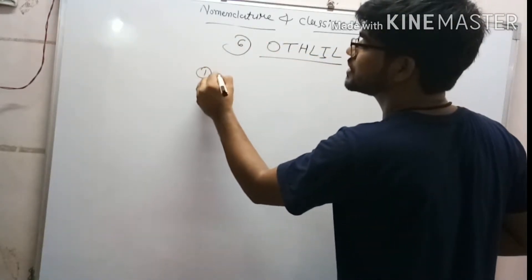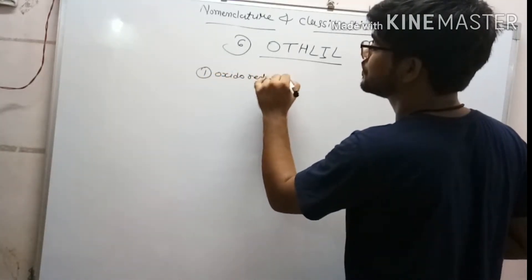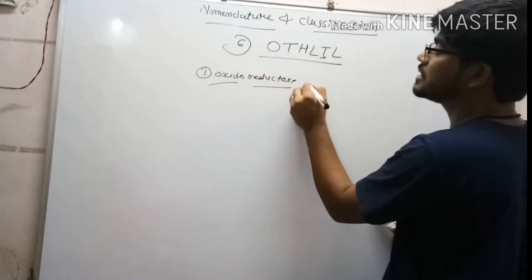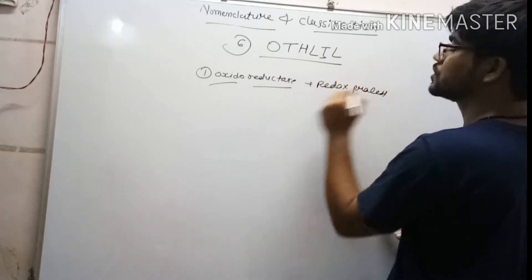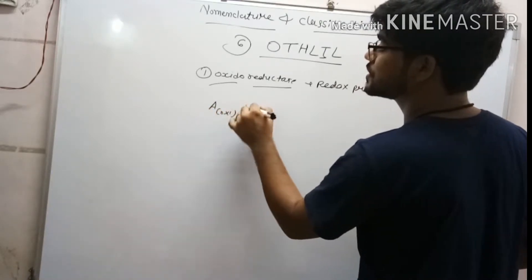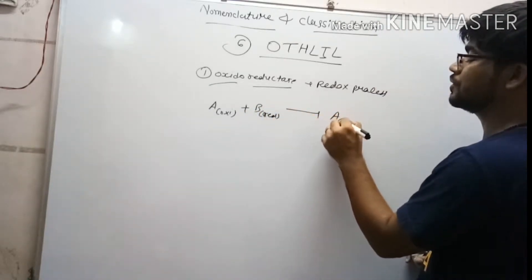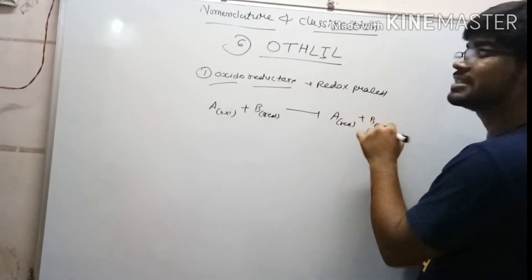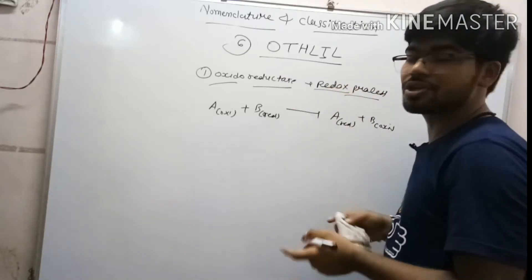First is oxidoreductase. As the name suggests, what will it do? Oxidation plus reduction means it does redox process. For example, here the substrate A which is oxidized, and substrate B is reduced. It converts A into reduced and B into oxidized, means transfer of electrons. It gives a redox process.